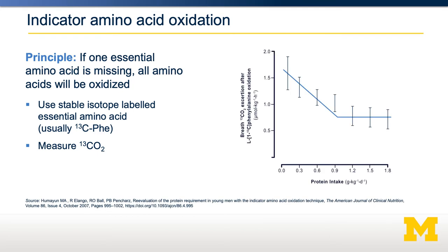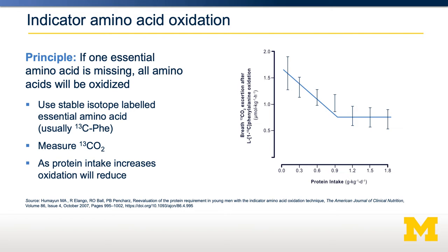As you can see in the graph, as total protein intake increases, the amount of carbon dioxide from 13C alanine decreases. This continues up until a steady state, at the point marked as the breakpoint. At that stage, more protein intake doesn't reduce amino acid oxidation anymore — phenylalanine oxidation continues at a steady level. The breakpoint is set at where that individual's protein requirements are.